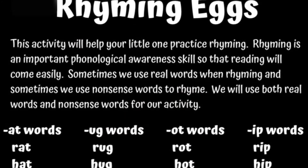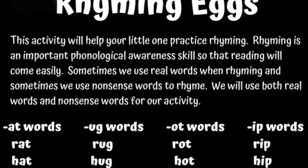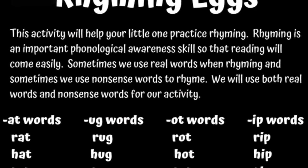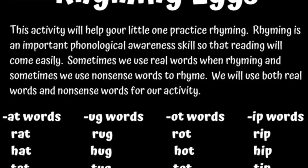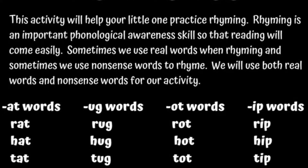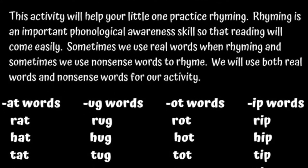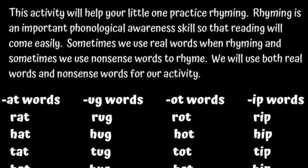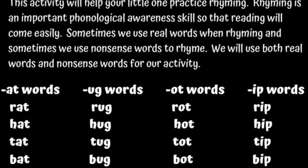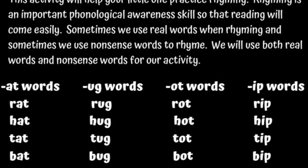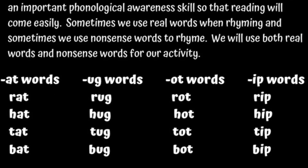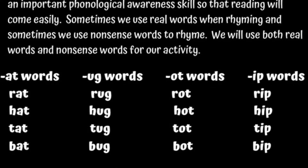Rhyming eggs. This activity will help your little one practice rhyming. Rhyming is an important phonological awareness skill so that reading will come easily. Sometimes we use real words when rhyming and sometimes we use nonsense words. We will use both real words and nonsense words for our activity.